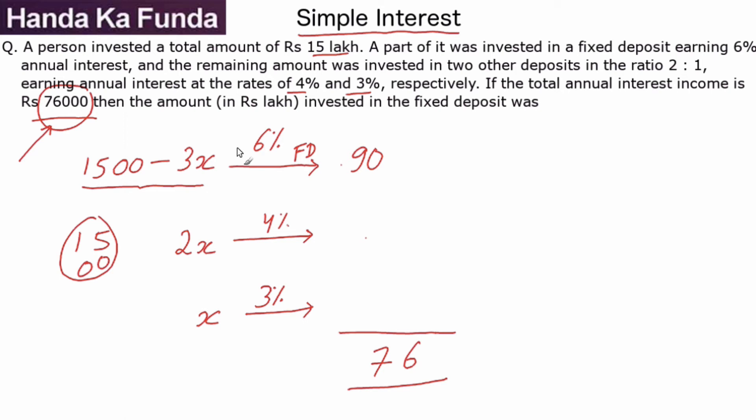6% of 1,500 is 90. 6% of 3x is minus 0.18x.